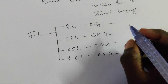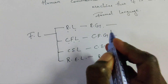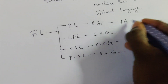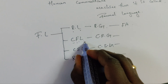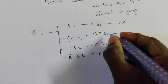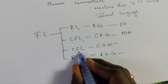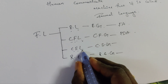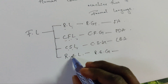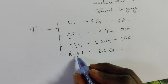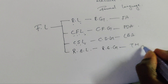Regular language is accepted by finite automata. Context-free language is accepted by pushdown automata. Context-sensitive language is accepted by linear bounded automata. And recursively enumerable language is accepted by Turing machine.